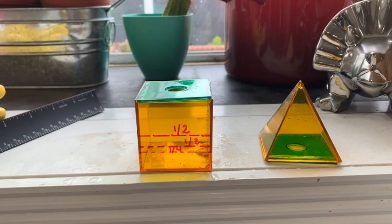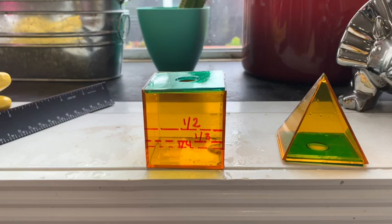Number one, this pyramid and number two, this prism. So these two have two things in common. First thing that they have in common is that they have congruent bases.